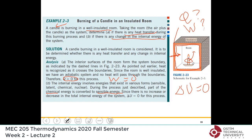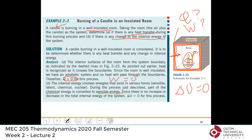If you took only the candle as the system, its energy changes because chemical energy is released. If you took only the air as the system, its internal energy increases as it absorbs the heat from combustion. But taking air plus candle together, one form of energy converts to another — the sum remains the same.